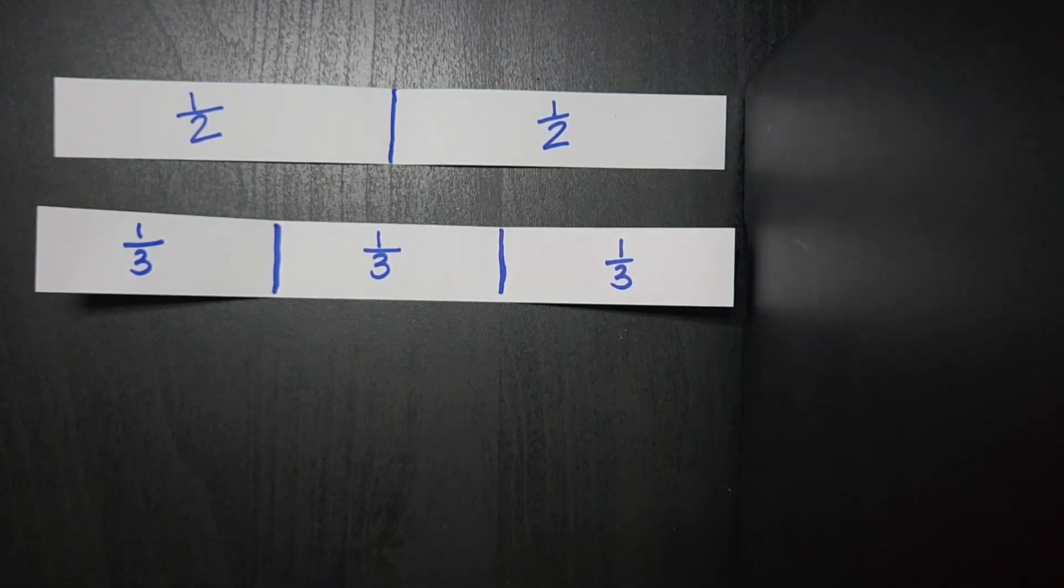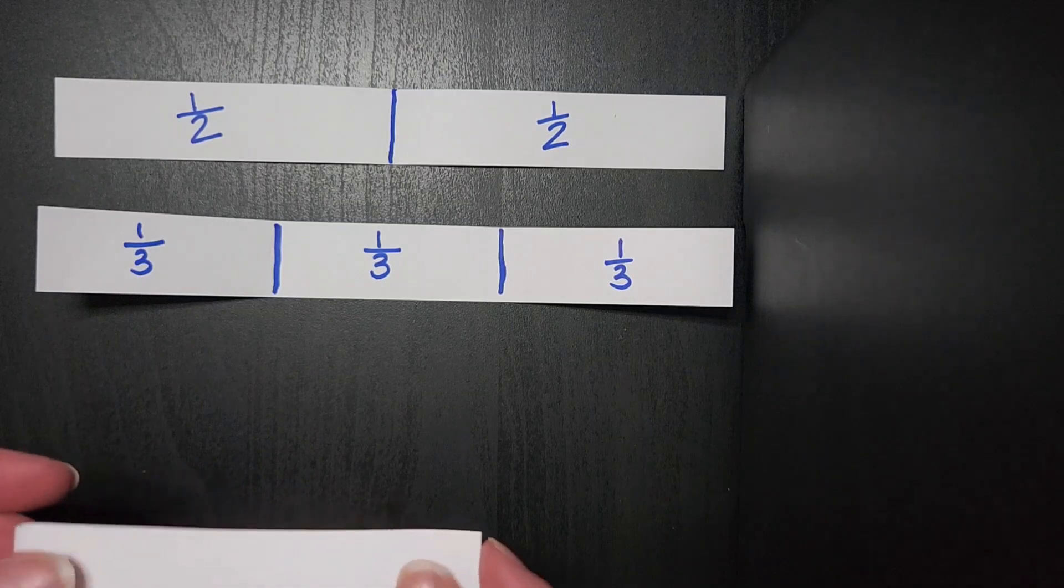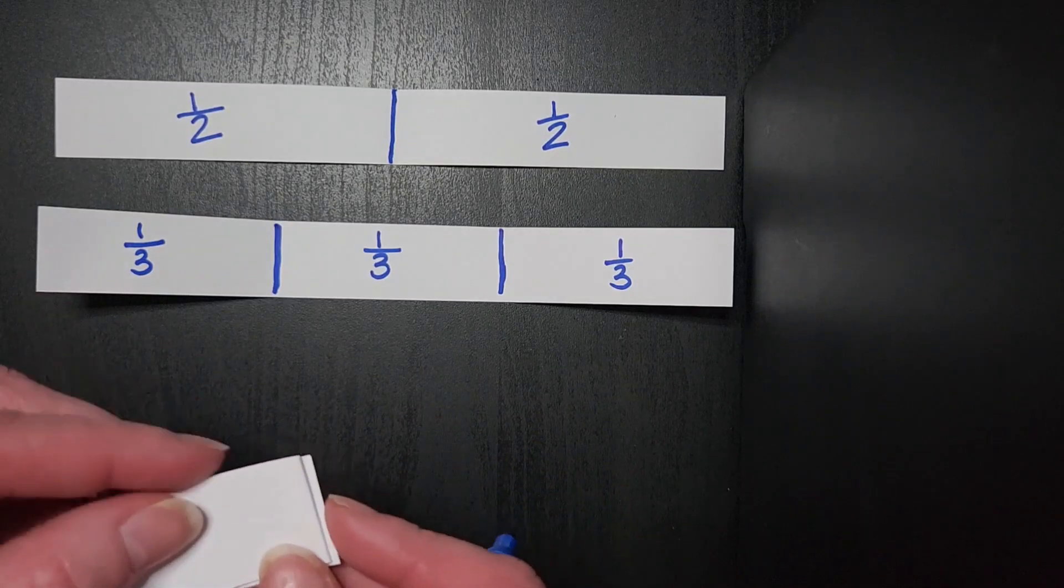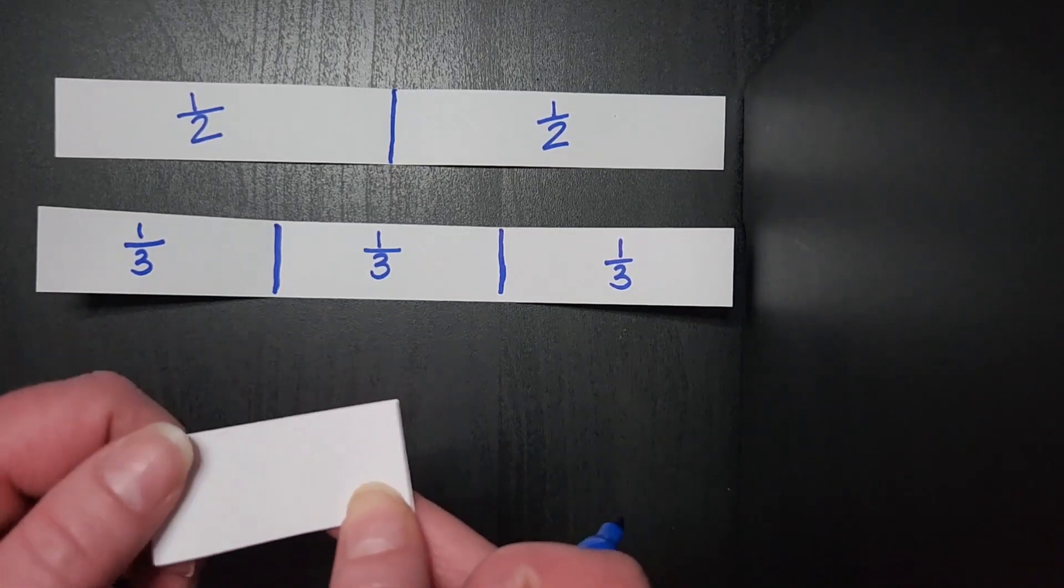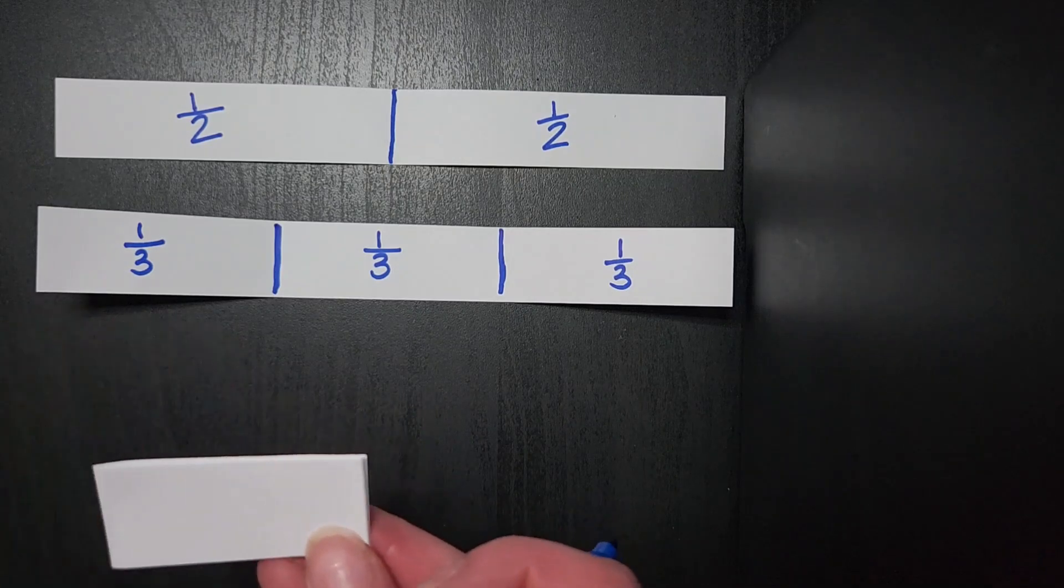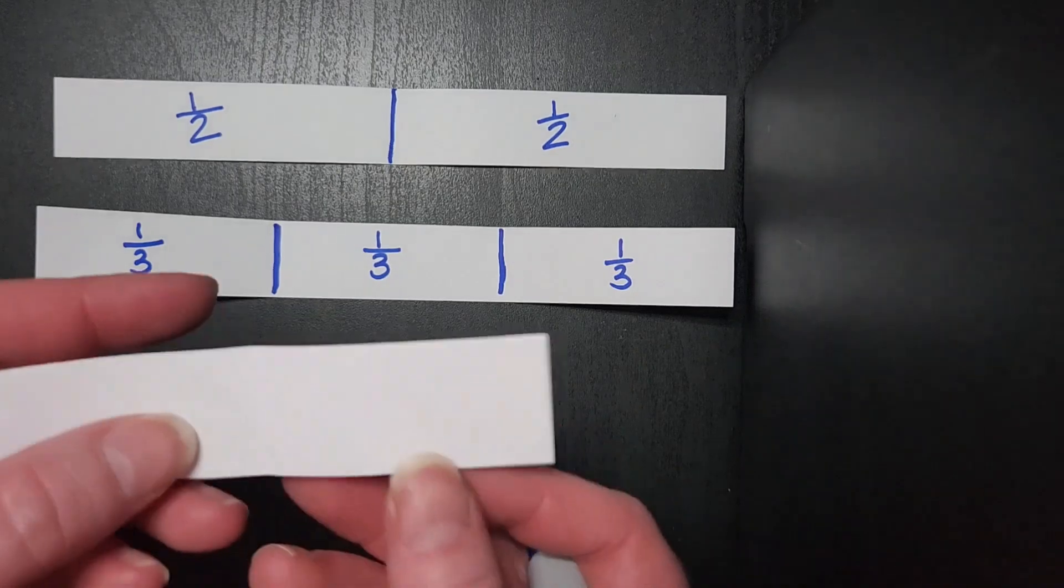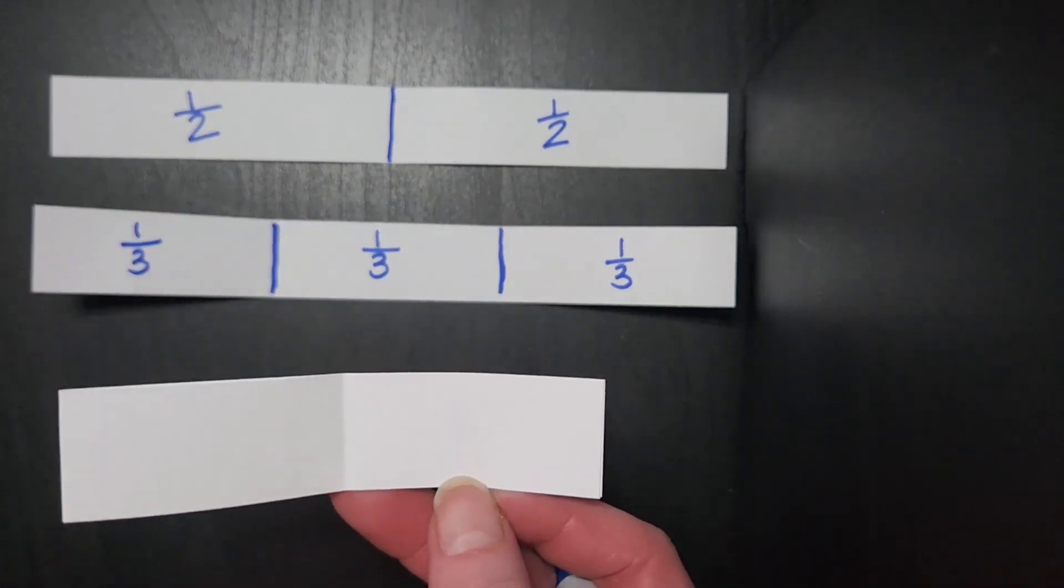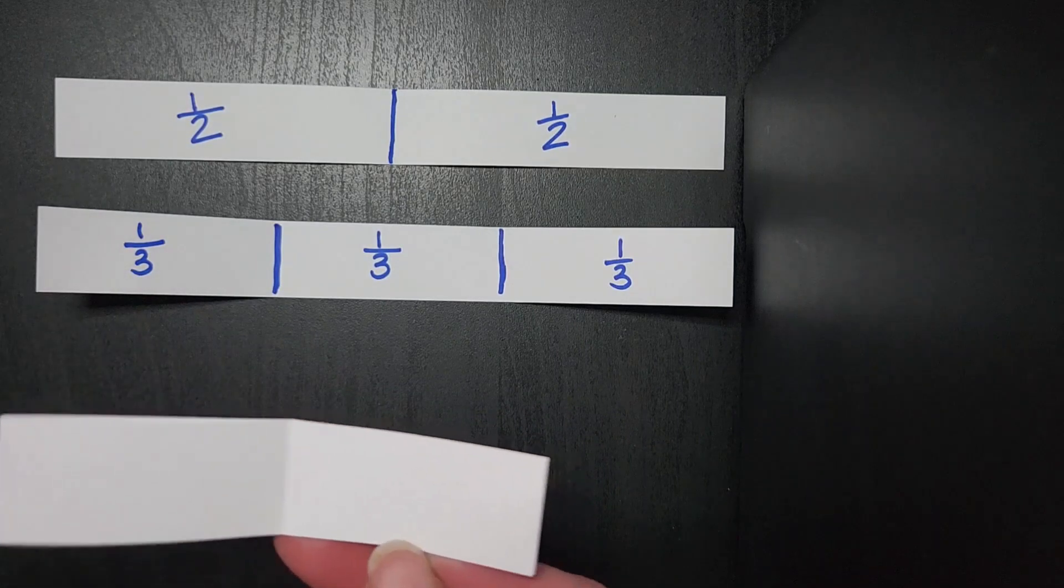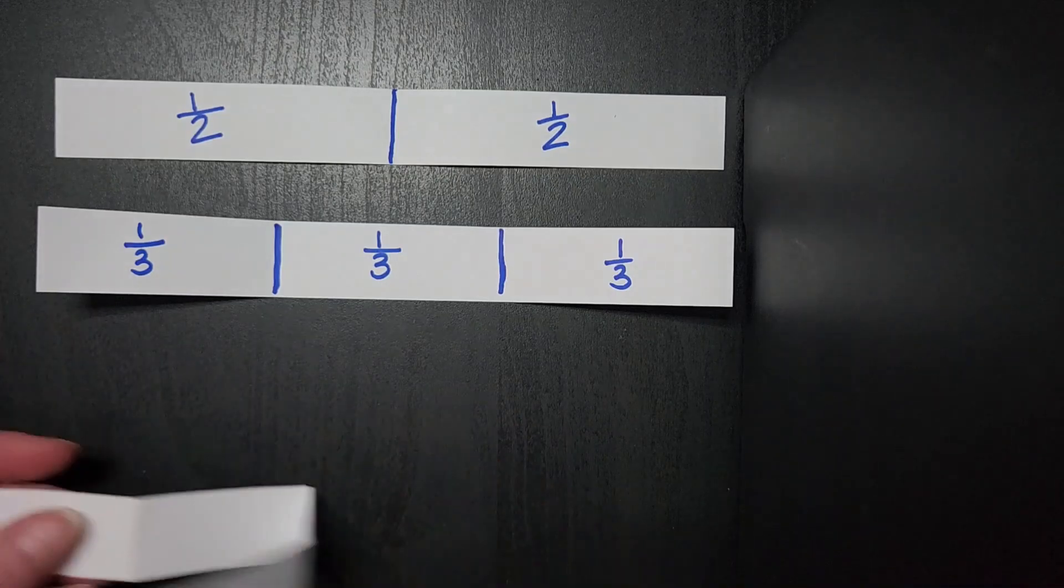So again, we take another piece, and I ask kids to fold it in half. Then I ask them to fold it in half again, and I ask them to tell me how many parts they think are in the whole now. And again, inevitably, somebody is able to tell me four because they understand that we doubled it. So we do take a second to talk about how when we had half, it was like this. And so what we did was we folded each of those halves in half, or we cut each of those halves in half. And that's what gave us our four parts.